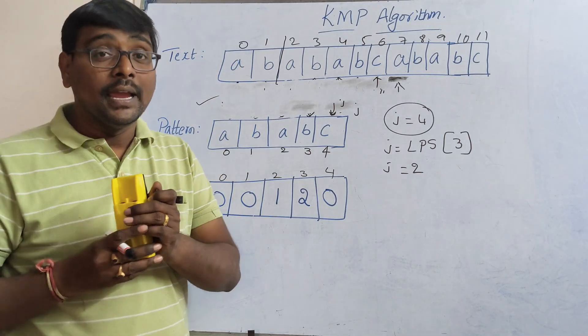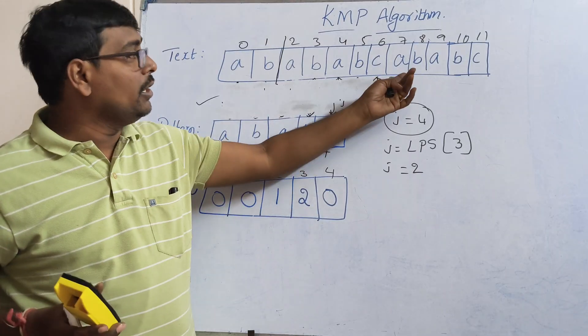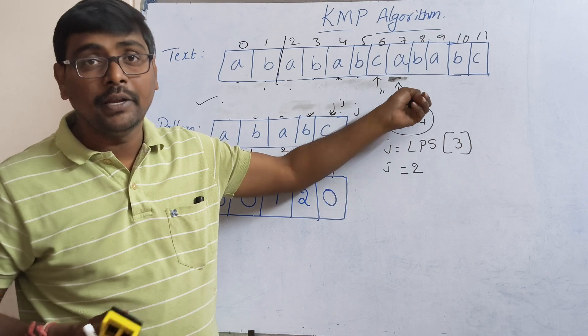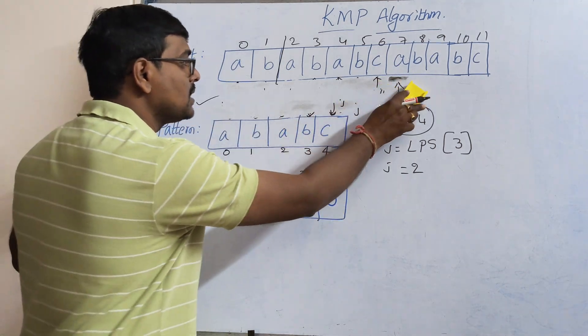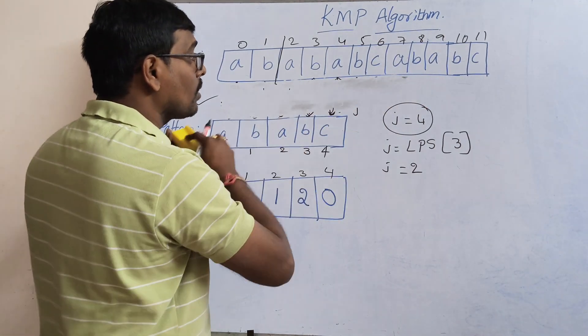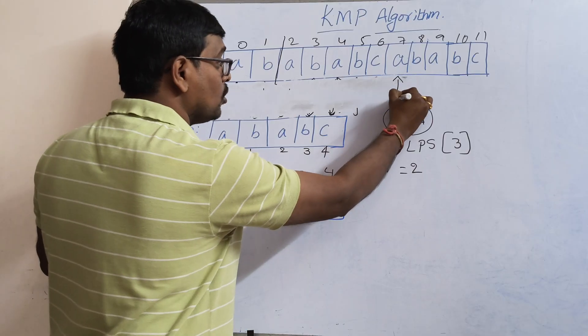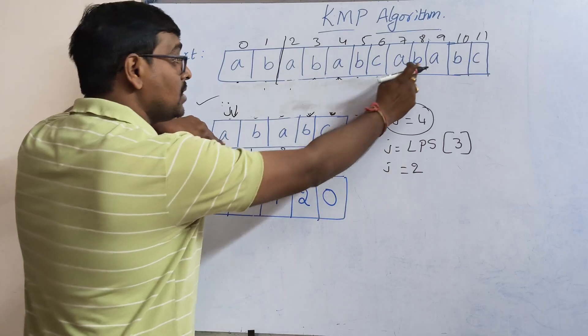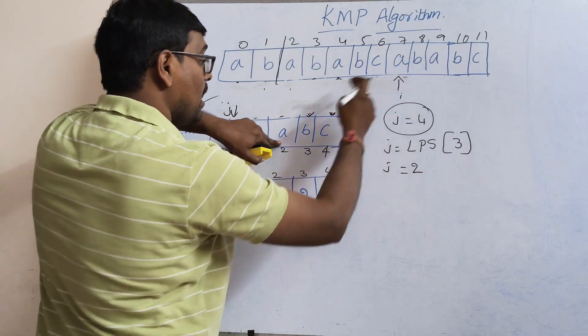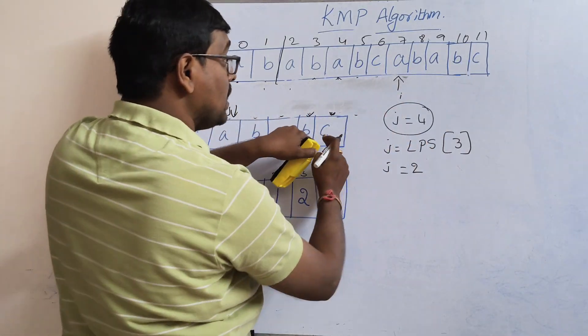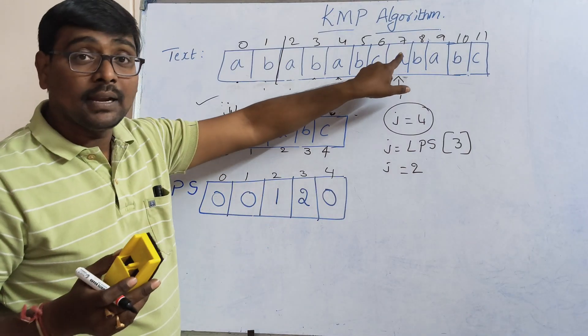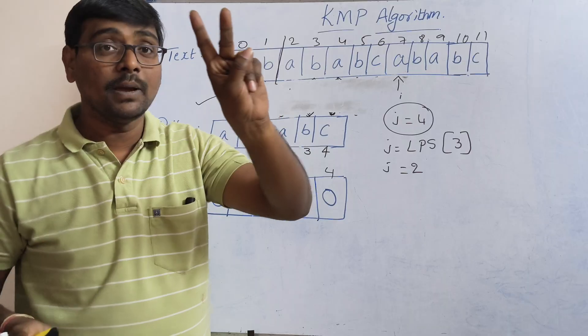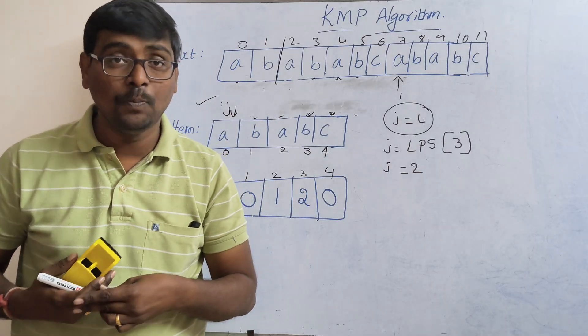Anyway, if you want to check how many number of times the pattern is repeated, you can do the same procedure. That means right now 'i' points to here, again 'j' starts from 0. Observe this one: a-a matching, b-b matching, a-a matching, b-b matching, and c-c matching. That means my pattern is available at position number 7 also.